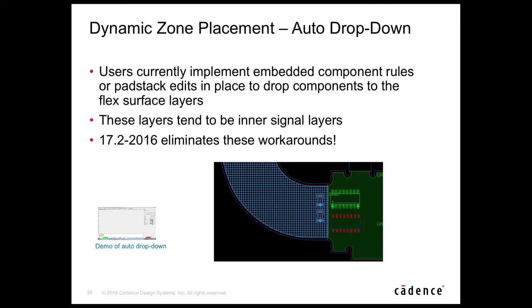For placement, when moving components from rigid to flex, 17.2 eliminates previous workarounds such as using embedded component technology or making in-place padstack edits. As components are moved across the boundary, they are automatically dropped down to the top layer of the flex with no action required from the designer.